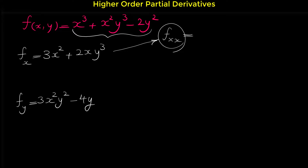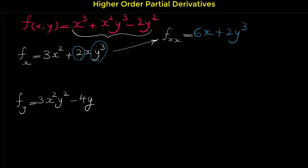This is the first partial derivative. If we take the derivative of this again with respect to x, we can find f sub xx. The derivative of 3x squared is 6x, and the derivative of 2xy cubed with respect to x is 2y cubed — since 2 and y cubed are constants, the derivative of x is 1, so 1 times 2y cubed is 2y cubed. So f sub xx equals 6x plus 2y cubed.